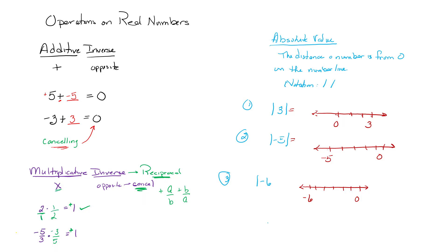Now let's talk about another piece of terminology called absolute value. Absolute value is, by definition, the distance a number is from 0 on the number line. The notation uses straight lines. In the first example, I'm finding the absolute value of 3. Looking at the number line, 3 is 3 spaces from 0 — it doesn't matter which direction you count. My answer is positive 3. Distance is always a positive number in the real world.